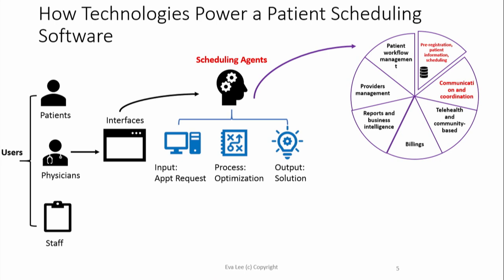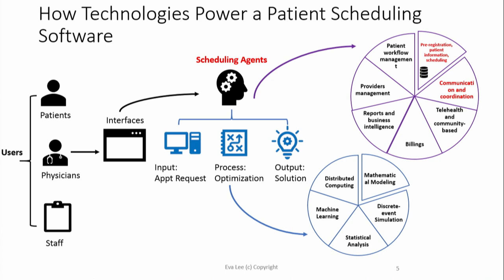As you implement it, you can implement it by pulling out each of these wedges, or within each wedge you have layers of phases. This gives us a picture of what the dream features are. How is it powered? By technology: mathematical programming and modeling, discrete event simulation, statistical analysis, machine learning, and distributed computing — because all the data is distributed across many different places, not just one single center, for redundancy, safety, and security.